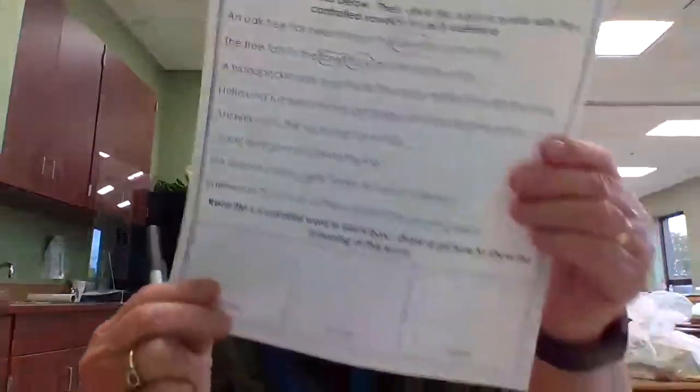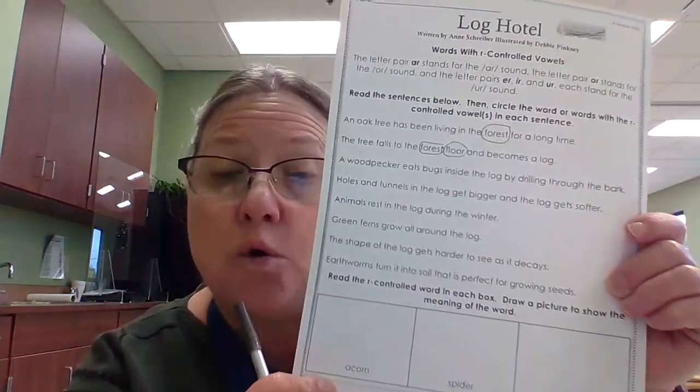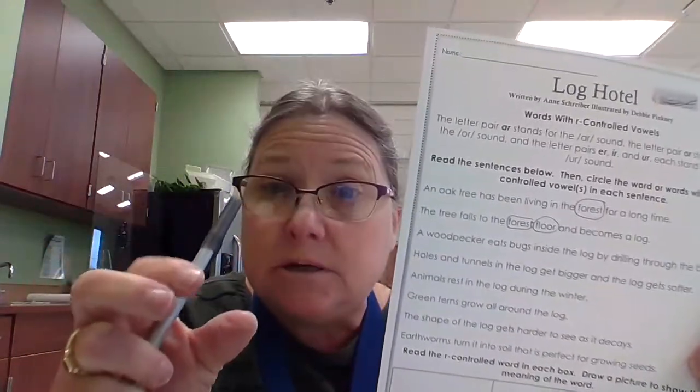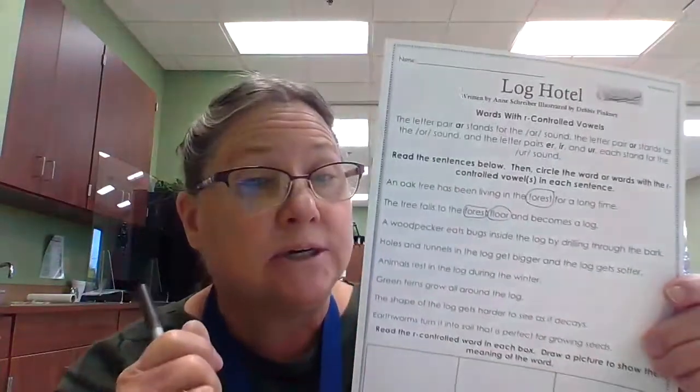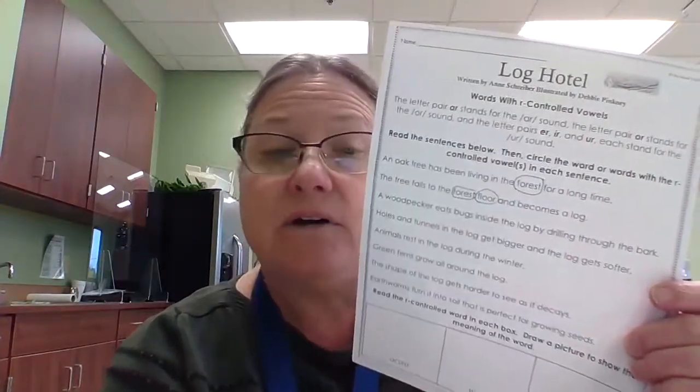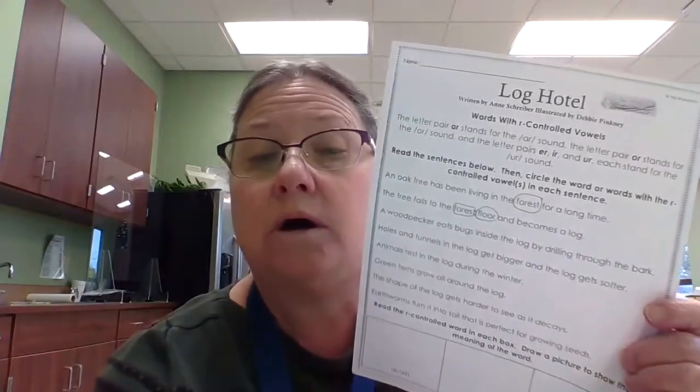Down at the bottom where the boxes are, it says to read the r-controlled word in the box and draw a picture to show the meaning. You may have to look in your Log Hotel book to see what some of these are. The first one is an acorn — you guys pick those up in the park all the time. It's that brown thing that falls from the trees with a hat-looking thing on top. You can find it in your book to draw it. The next one is a spider — draw a picture of a spider. The last one is a turtle — draw a picture of the turtle.